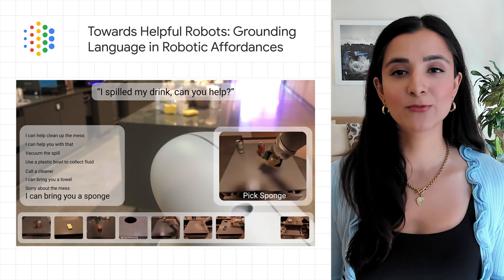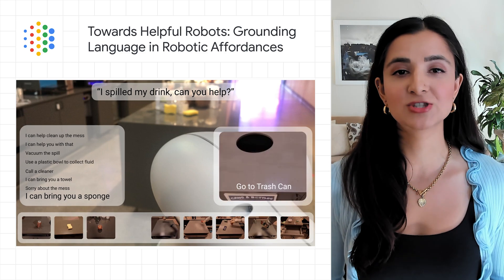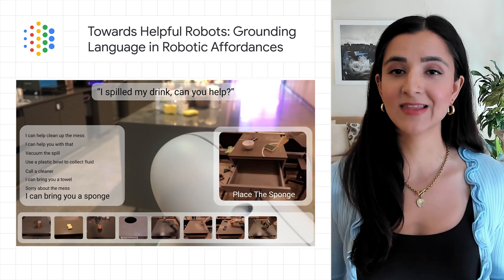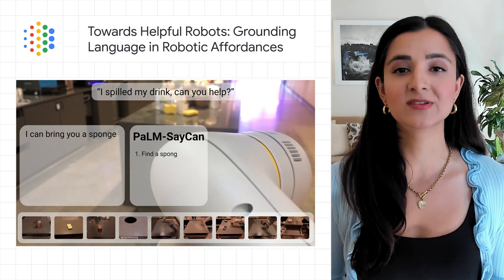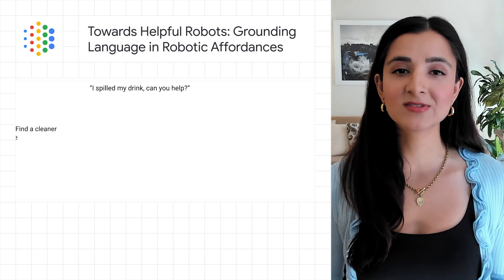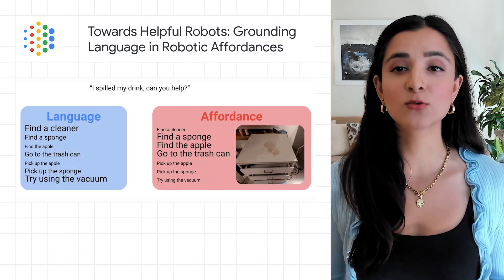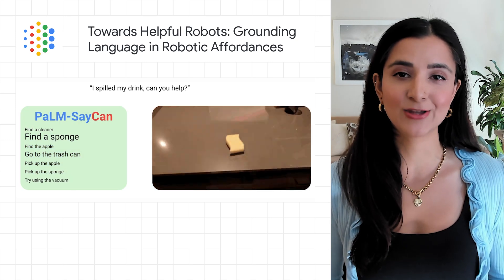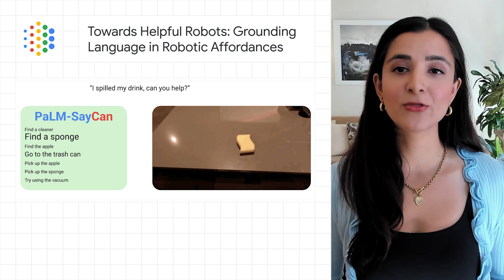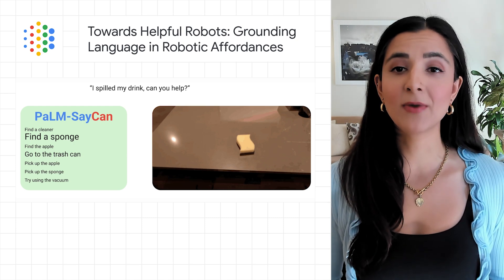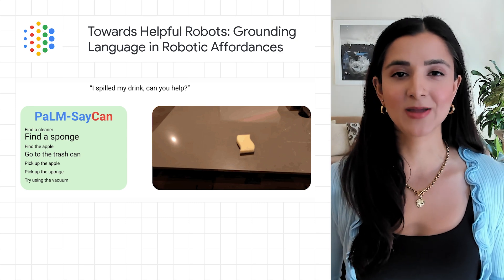In partnership with Everyday Robots, the Google AI research team has published a new approach that uses the knowledge contained in language models to determine and score actions that are useful towards high-level instructions. It also uses an affordance function that enables real-world grounding and determines which actions are possible to execute in a given environment. Using the POM language model, the researchers have called this approach POM Say Can. Check out the blog linked below to learn more and read the original paper.